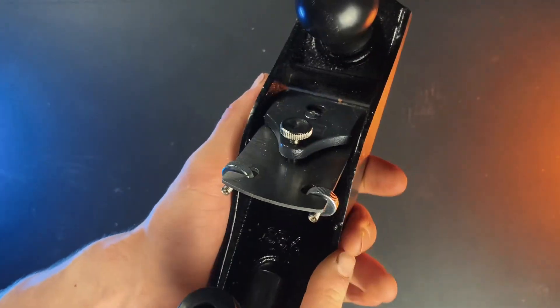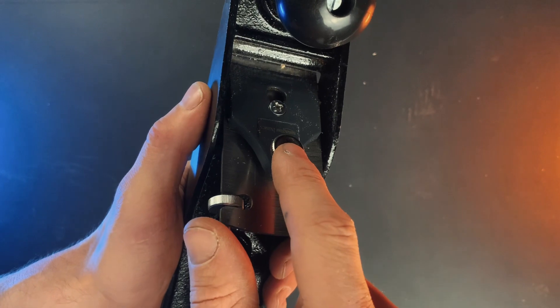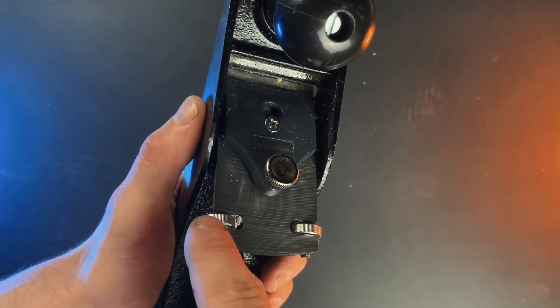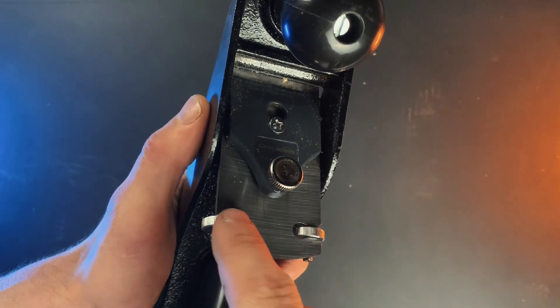Anyway, the blade is a two inch blade and it's pretty sharp. This thumb screw is for taking the blade out and then these two are for adjusting it up and down and side to side.